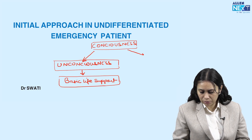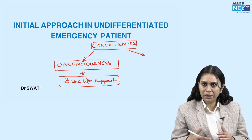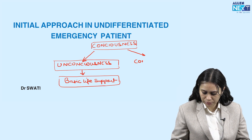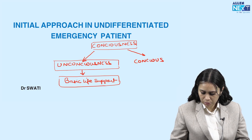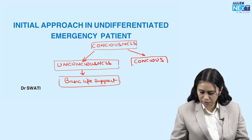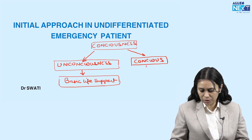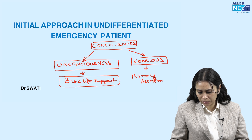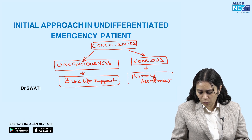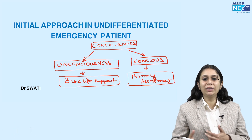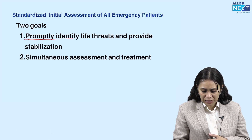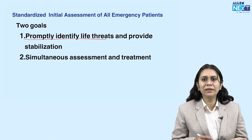But if the patient is conscious — which is what we will discuss in this video — the BLS approach will be discussed in the subsequent video. So if the patient is conscious, what would be the approach? We go for primary assessment. The goal of primary assessment is to promptly identify the life threats and provide stabilization.